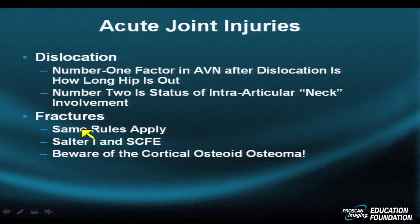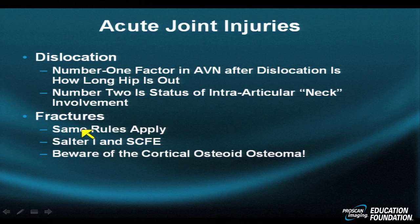Beware of one particular diagnosis that may mimic acute joint injuries, physeal abnormalities, and even femoroacetabular impingement — that is the cortical intra-articular osteoid osteoma, which may generate an effusion but may also produce little or no intramedullary or endosteal bone marrow edema.